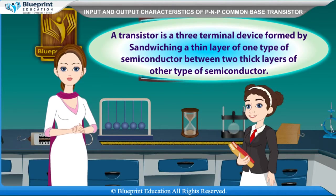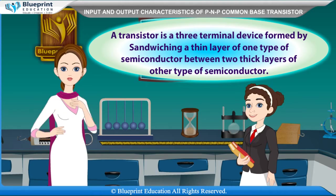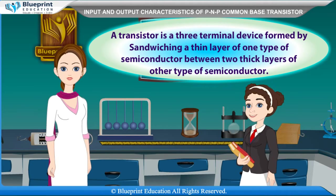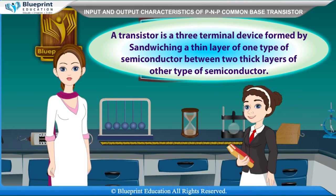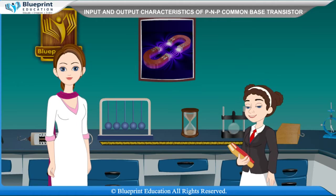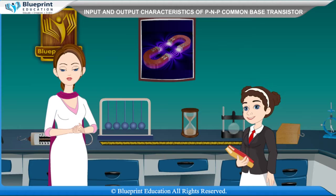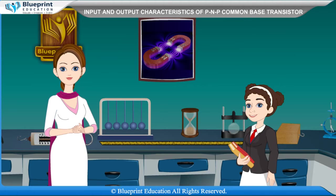A transistor is a three terminal device formed by sandwiching a thin layer of one type of semiconductor between two thick layers of another type of semiconductor. A transistor works as switched off in its cut-off region and works as switched on in its saturation region.